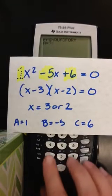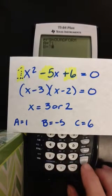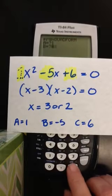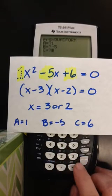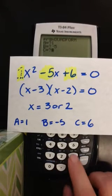So it's asking us what A is. So we're going to say 1. It's asking us what B is. Negative 5. And it's asking what C is. And C is 6.